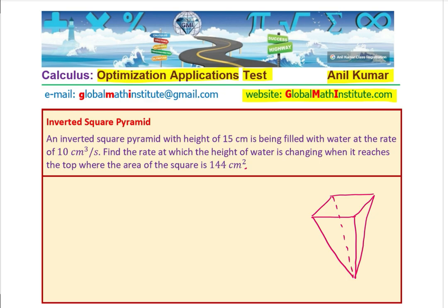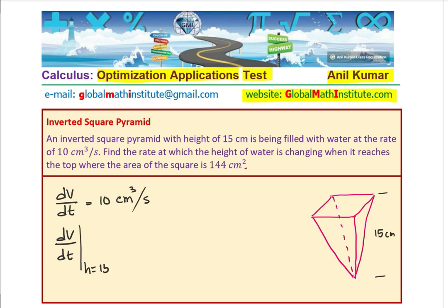In this pyramid, we are given that the height is 15 cm. All units are in centimeters. It is being filled at the rate of 10 cm³ per second, meaning dV/dt = 10 cm³ per second. We need to find the rate at which the height is changing when it reaches the top, i.e., when height is 15.